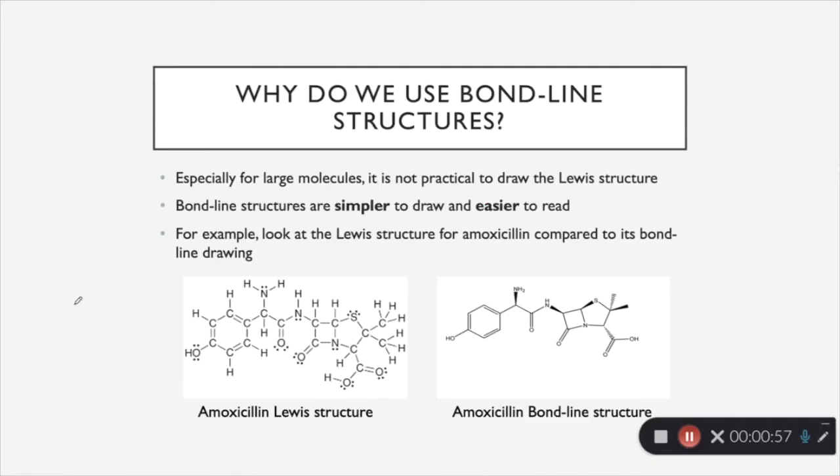The reason that we use bond line structures is that they are simpler to draw and simpler to read than Lewis structures. You can see on the left here, we have the Lewis structure of amoxicillin, and then on the right, we have the exact same molecule, but it's just a little bit easier to look at.